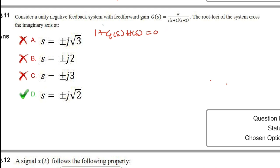So 1 plus G(s) H(s) equals 0. We need to find this. H(s) is unity feedback, so one. That implies we can write s(s+1)(s+2) + k = 0. If we simplify this equation, we get s³ + 3s² + 2s + k = 0.